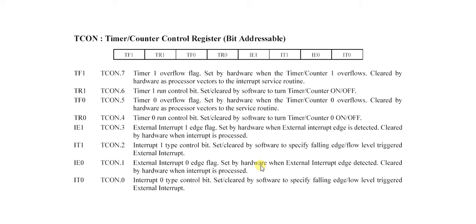IE0 is the same as IE1 except it is for external interrupt 0 — it is the external interrupt 0 flag, and the signal is received on port 3.2. Its ISR address is 0003H. IT0 is the same as IT1 but for external interrupt 0. So there are 2 external interrupt flags and 2 external interrupt signal type control bits, plus 2 overflow flags and 2 run control bits. This is the TCON register.